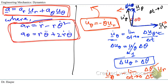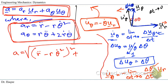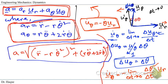We'll use this to solve problems, but first let's find the magnitude, which is simply the square root of the sum of squares of both components: the square root of (r-double-dot minus r·θ-dot²)² plus (r·θ-double-dot plus 2·r-dot·θ-dot)². This is how we can get the magnitude of the acceleration.